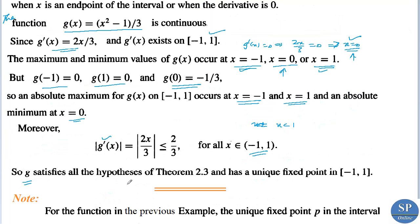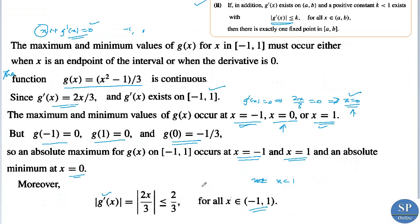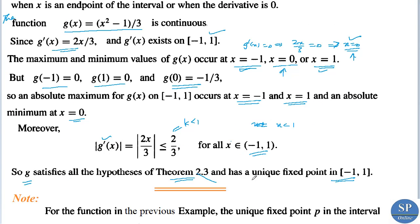Therefore, g satisfies all the hypotheses of Theorem 2.3, and therefore g has a unique fixed point in the interval [-1, 1]. We obtained that g is a continuous function and g(x) belongs to [-1, 1] for all x in [-1, 1], so g has at least one fixed point. Also, we obtained that |g'(x)| ≤ 2/3 = k, which is less than 1, so this condition is also satisfied. Therefore, by the previous theorem, there is a unique fixed point in [-1, 1].